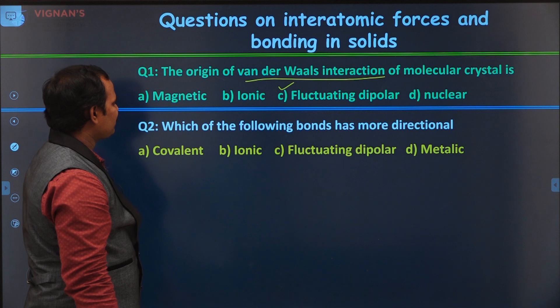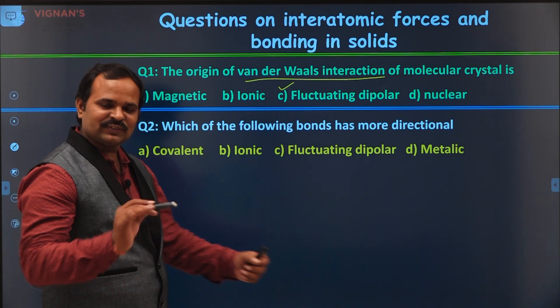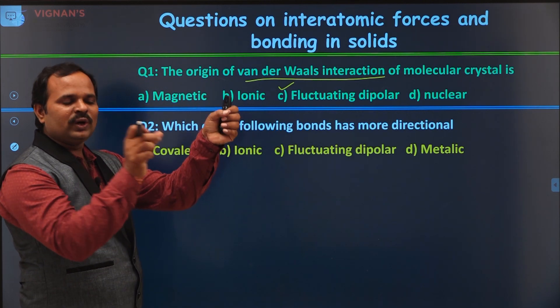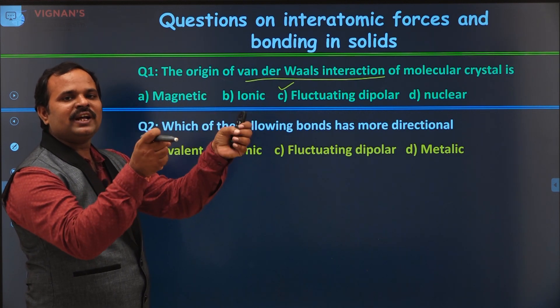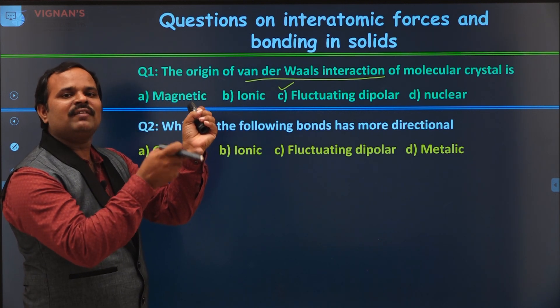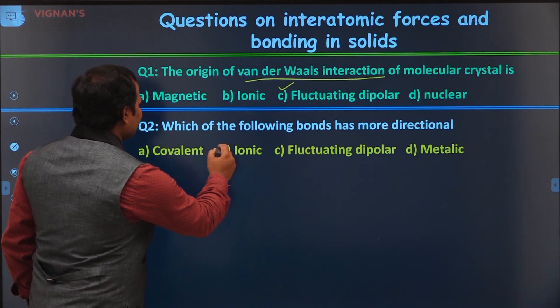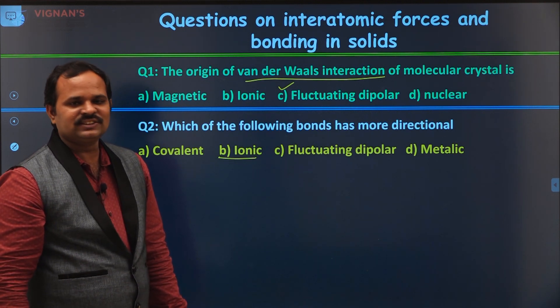The second question is, which of the following bonds has more directional character? This is a very straightforward question. We know that the covalent bond always forms in only one particular direction, where the molecules and the orbitals are overlapping. There only we will have bonding. Other places, we will not have bonding. And when you come to ionic bonding, the ionic bonding is not at all directional.